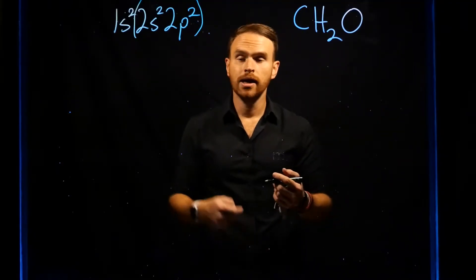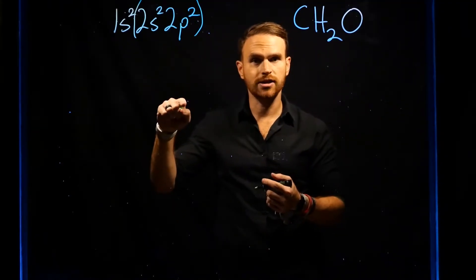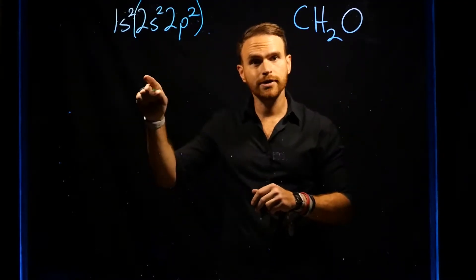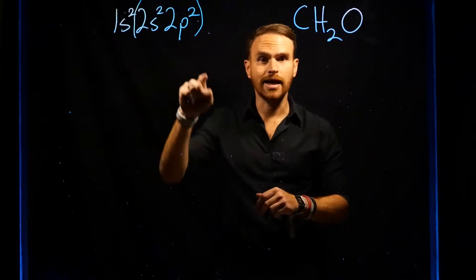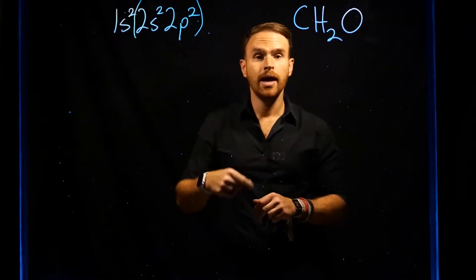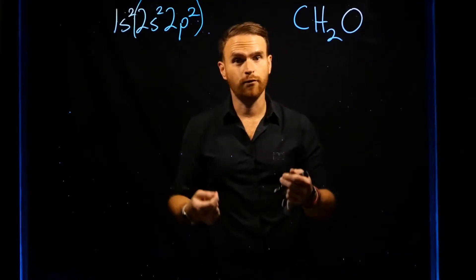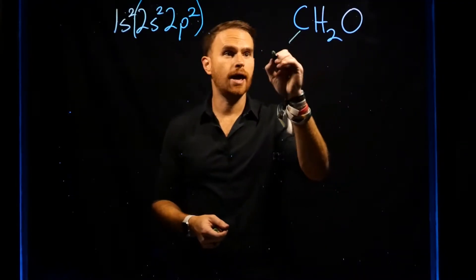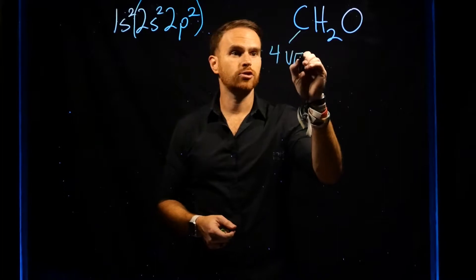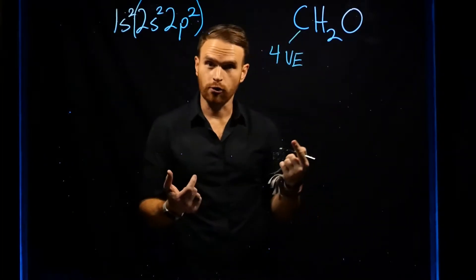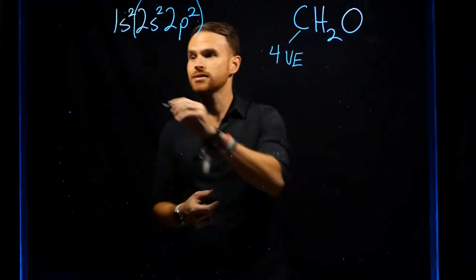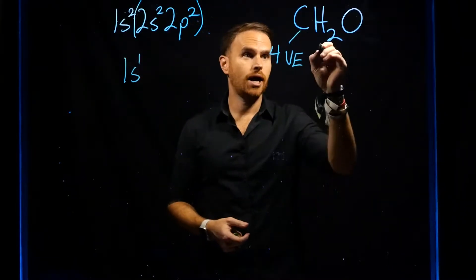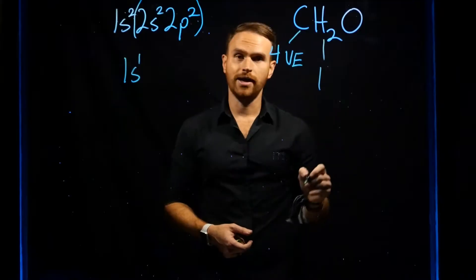Another way to quickly determine how many valence electrons there are for each individual atom is to go to the row on the periodic table where you find each atom. For carbon, it's the second row. Start on the left-hand side of the periodic table and count over until you get to carbon — it's the fourth element on the second row, so carbon has four valence electrons. Hydrogen is the first atom on the periodic table, and its electron configuration is 1s¹, so each hydrogen has one valence electron.